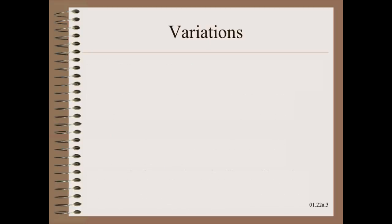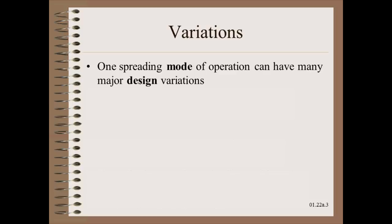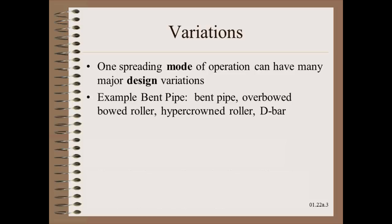In this video we focus on two concepts that are not as well known as they should be. The first is that the same mode of operation can be achieved by very different designs. For example, the bent pipe spreading mode or principle can be achieved by bent pipes, bowed rollers, hyper crowned rollers, and the D-bar.